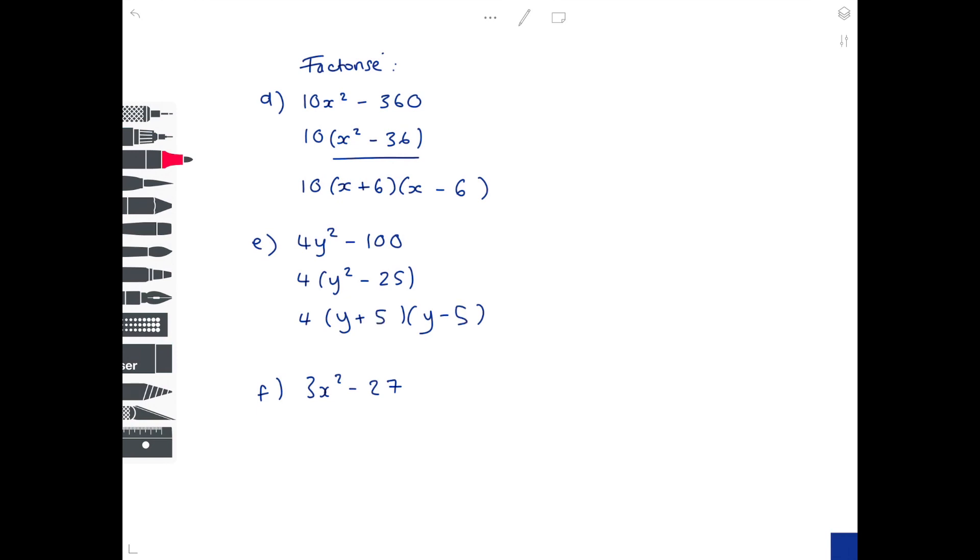Our last example is 3x squared minus 27. So the common factor here is 3. What do we multiply 3 by to get 3x squared? That's x squared. What do we multiply 3 by to get minus 27? That's minus 9. Let's do the difference of two squares, so pop your x in at the beginning. What number do you multiply by itself to make 9? That is 3. And that is your final answer.